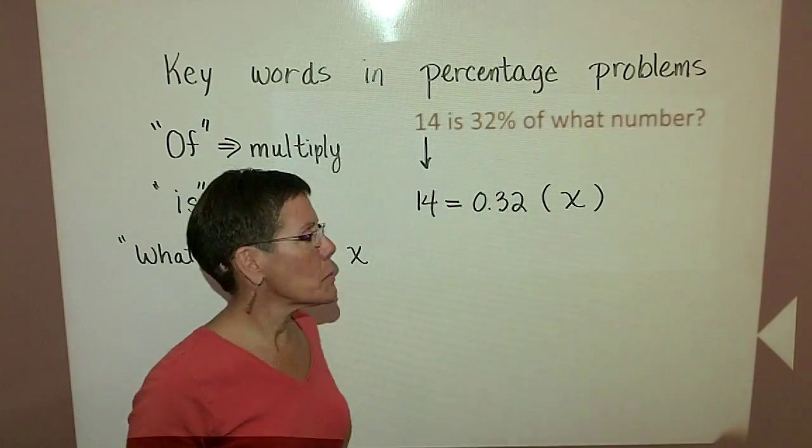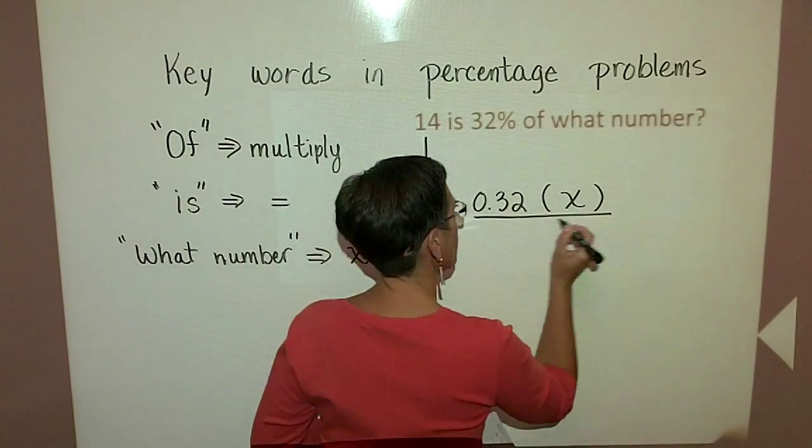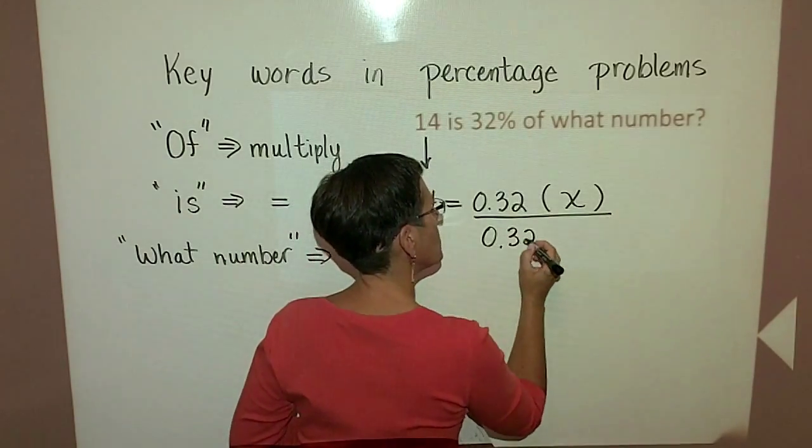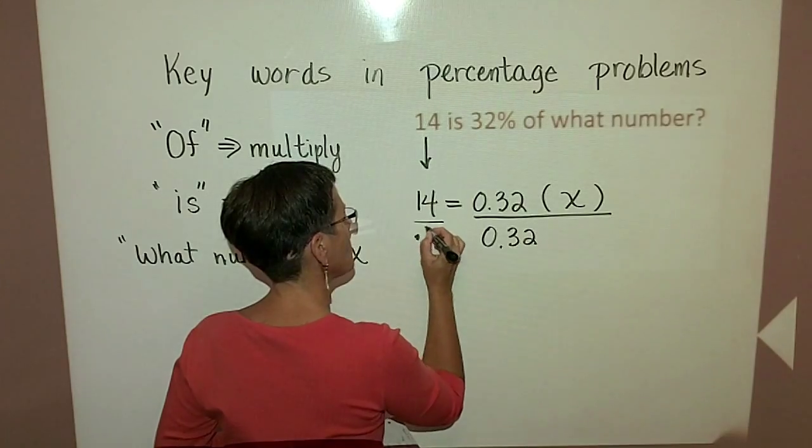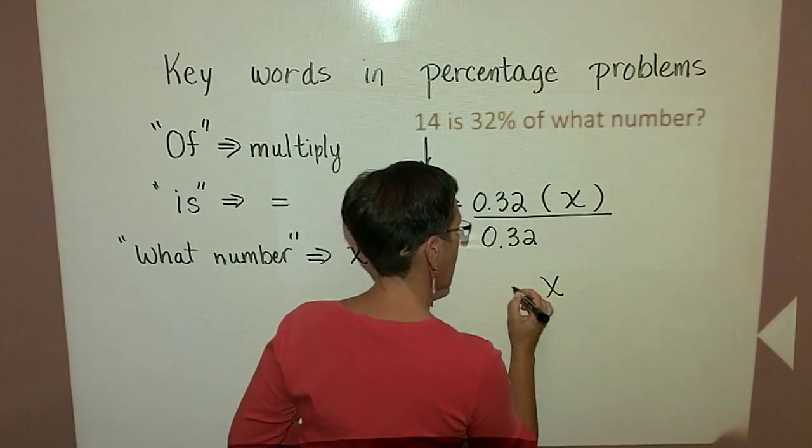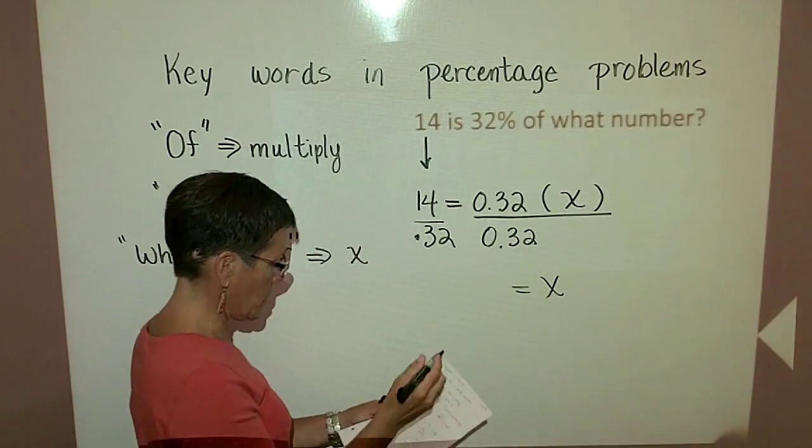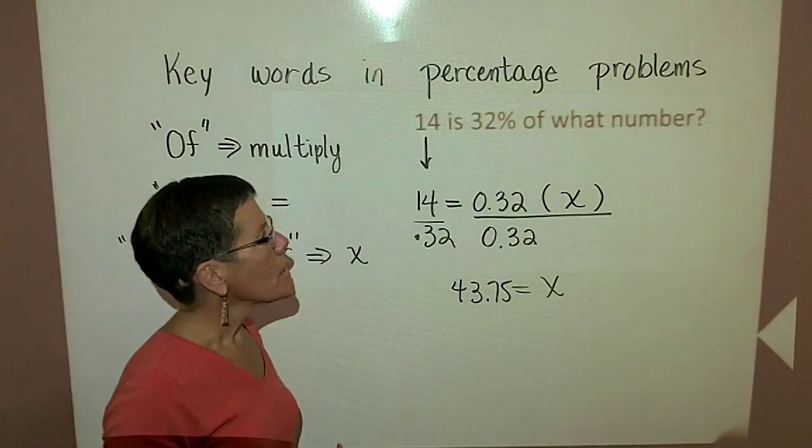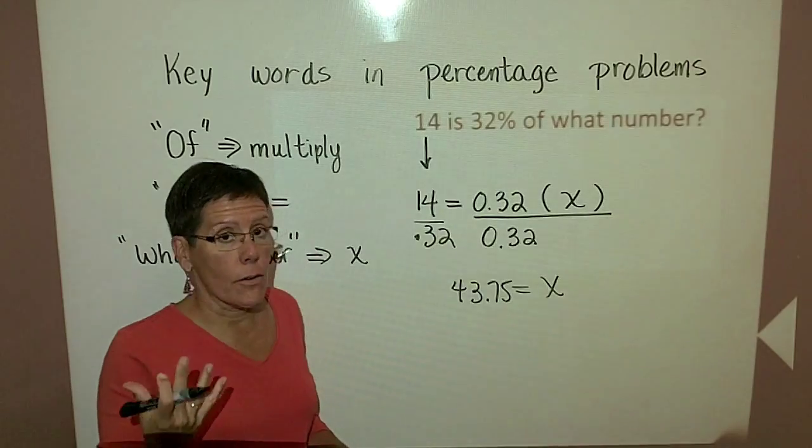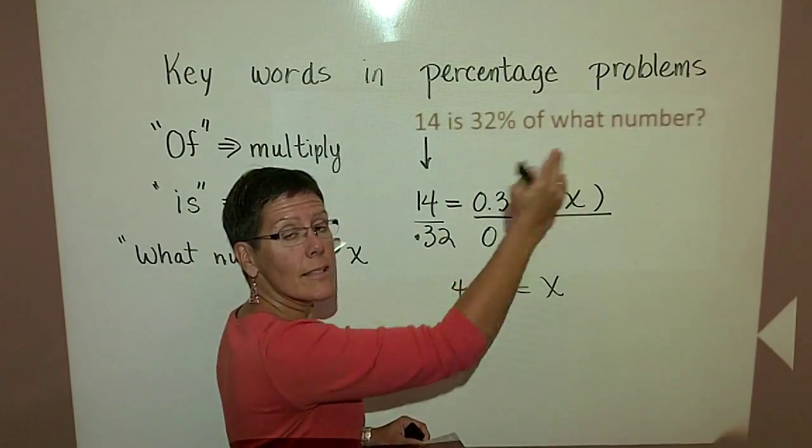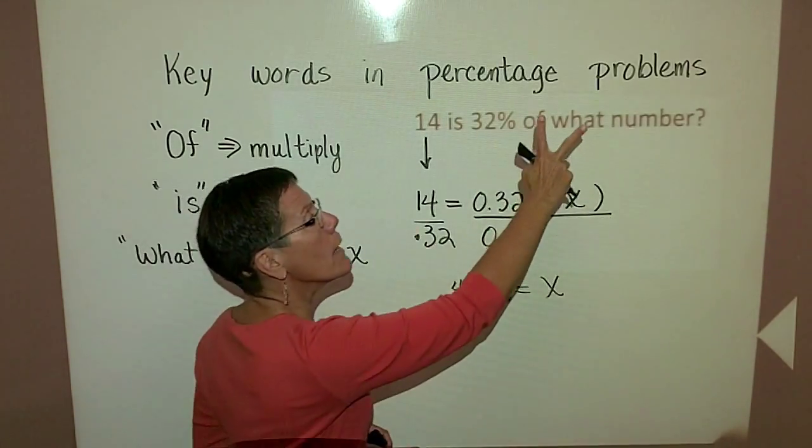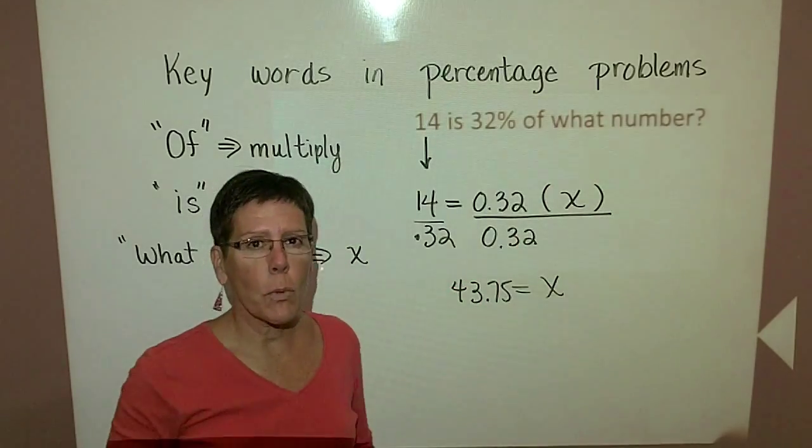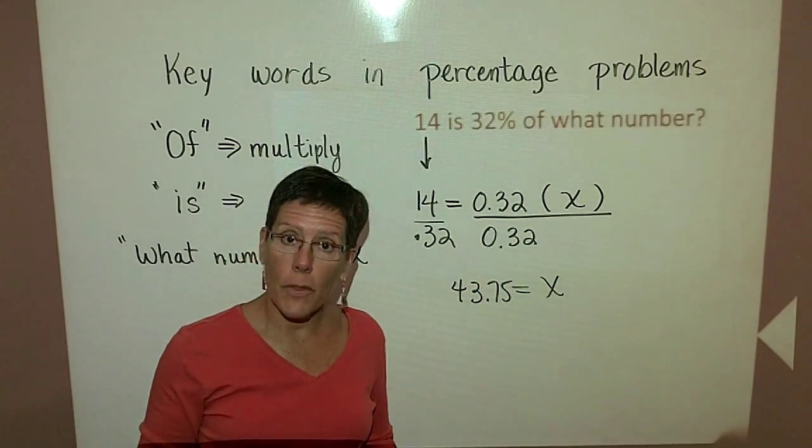To solve for X in this particular problem, I'm going to divide both sides by 0.32, and I'll find out that X is equal to 43.75. So again, given two things out of three in this phrase, I'm looking to solve for that what number. The next one we're going to do, we're going to solve for the percentage.